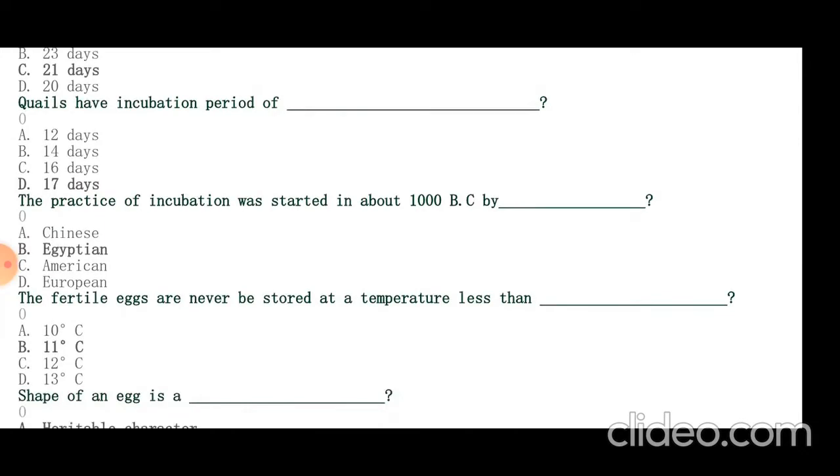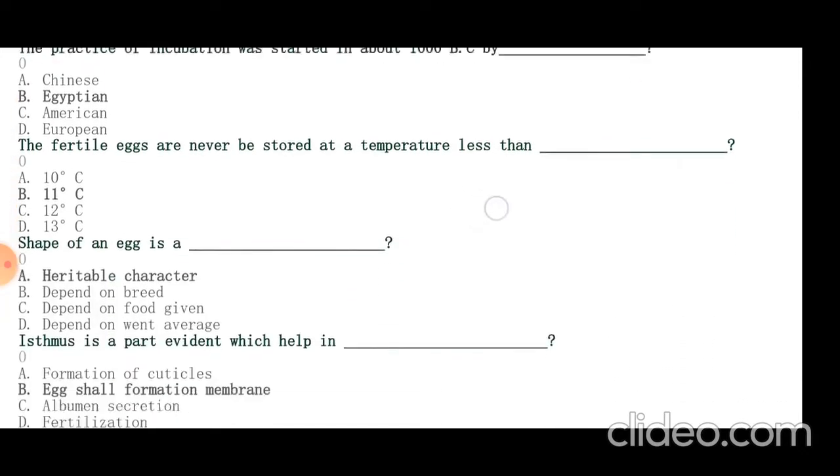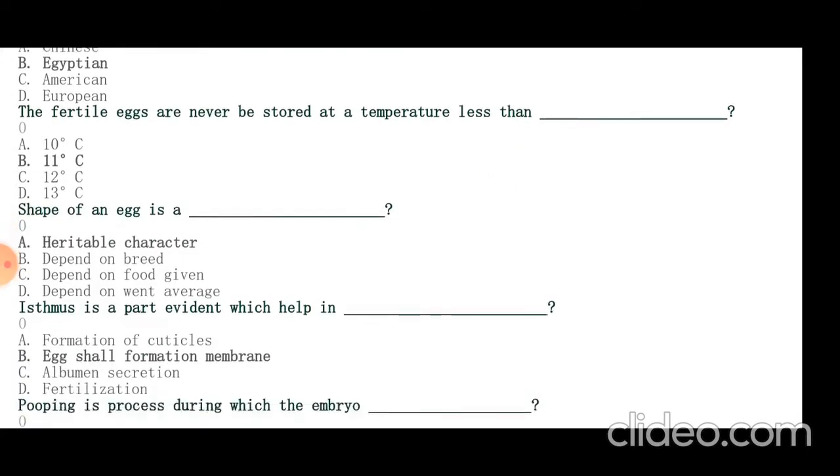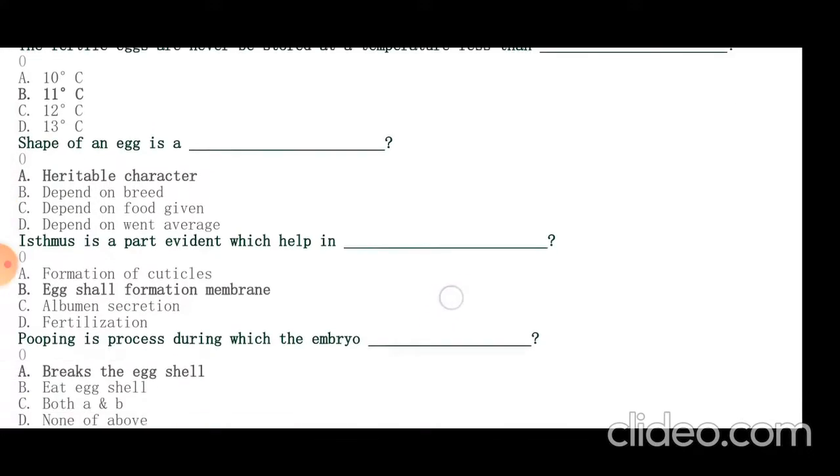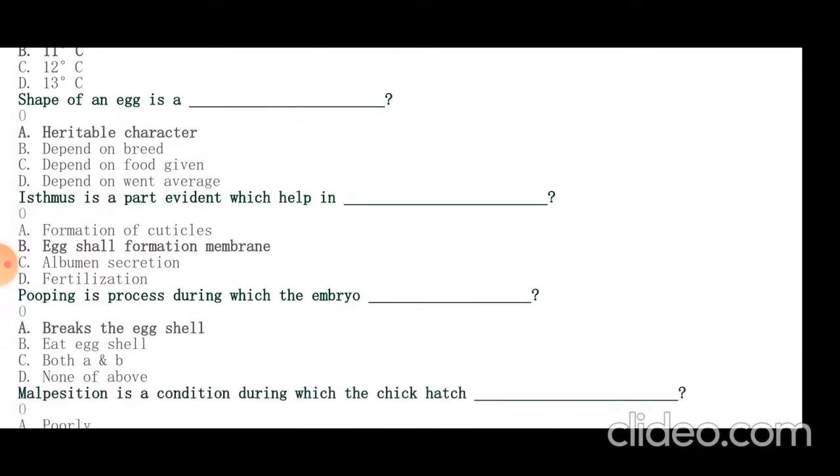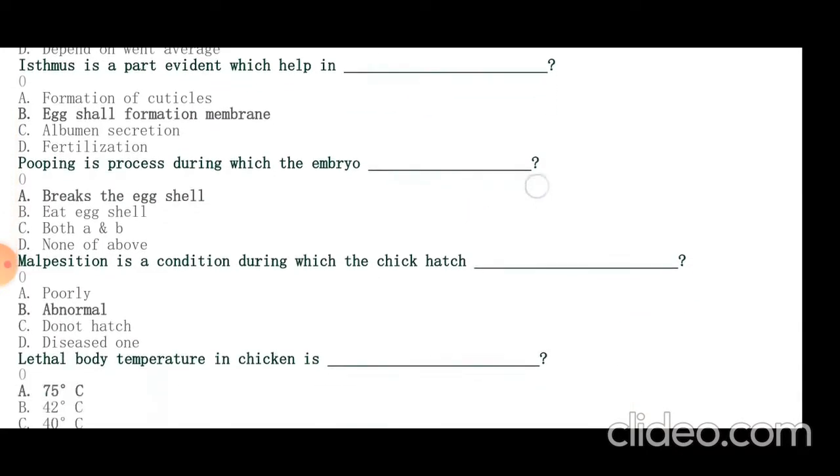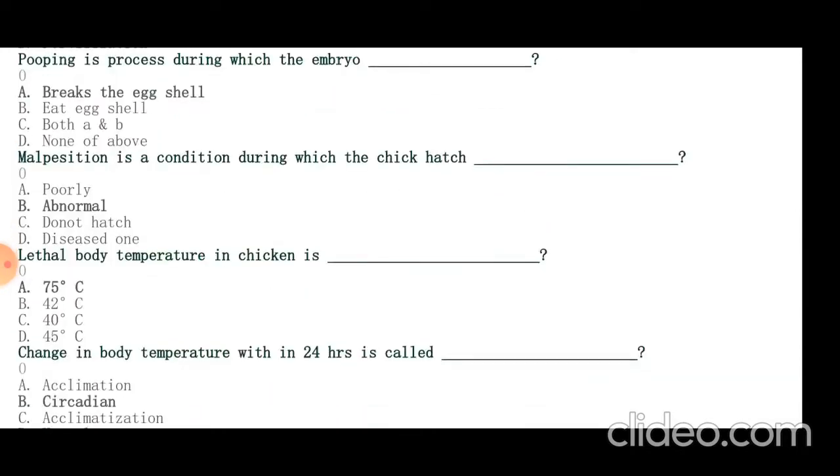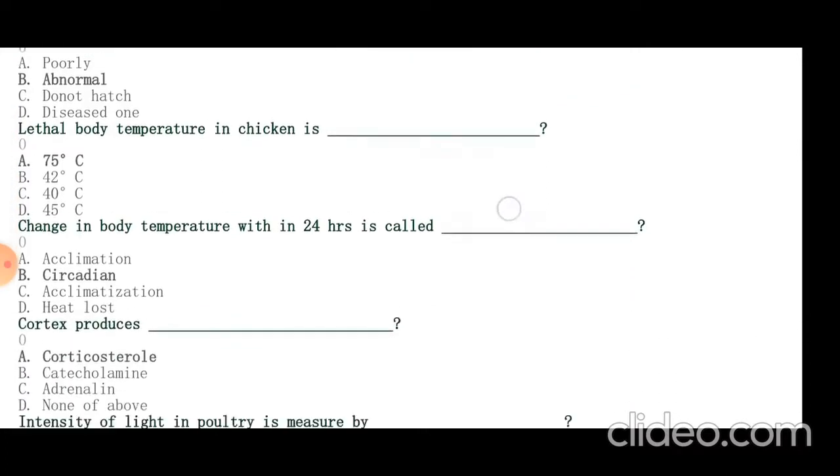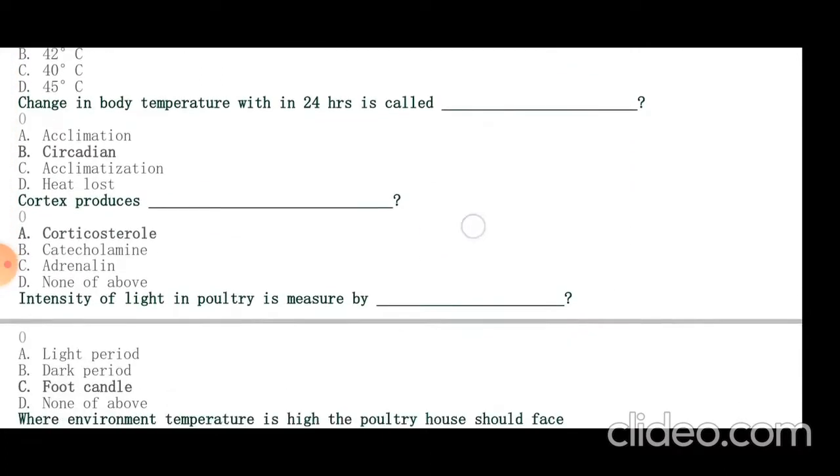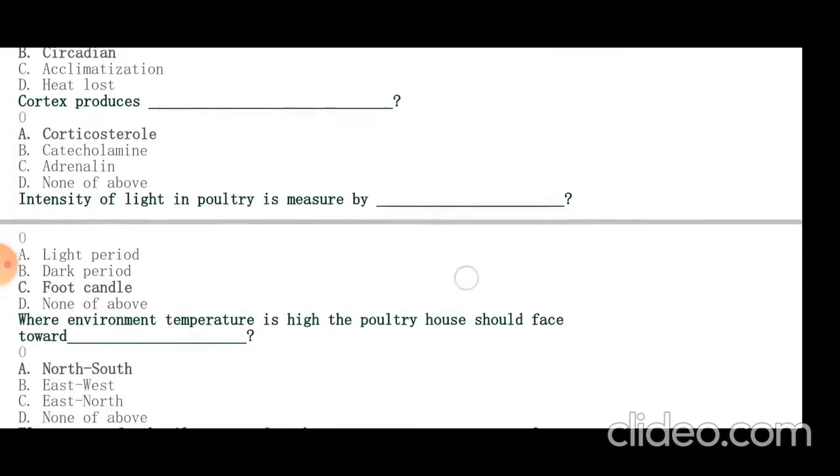Fertile eggs are never stored at temperature less than 11 degrees centigrade. Shape of an egg is a heritable character. Isthmus is part of oviduct which helps in eggshell membrane formation. Pipping is a process during which the embryo breaks the eggshell. Malposition is a condition during which the chicken hatches abnormally. Lethal body temperature in chicken is 47 degrees centigrade. Change in body temperature within 24 hours is called circadian. Cortex produces corticosterol and density of light in poultry is measured by foot candle.